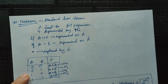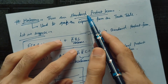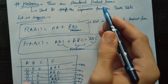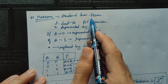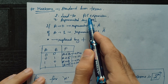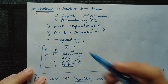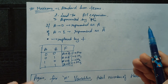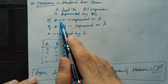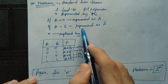Now let us move to max terms. Max terms are standard sum terms — they are the dual of min terms, which were standard product terms. Max terms lead to Product of Sums (POS) expressions, while min terms led to Sum of Products (SOP). Max terms are represented by capital M: M(0), M(1), etc. If a variable is 0, it appears uncomplemented; if it is 1, it appears complemented in the sum term.